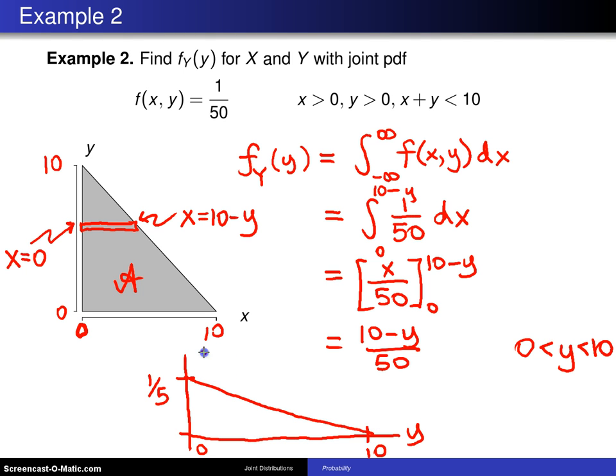And when you plug in 10, you get 0, and it is a linear function. So it looks something like that. That is a picture of the probability density function of the marginal distribution for y.